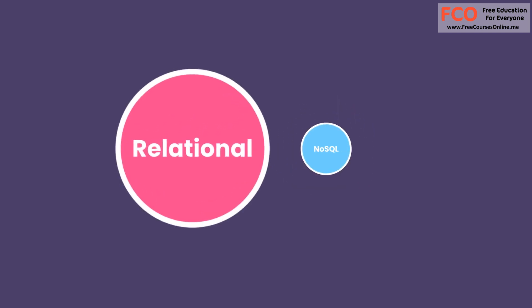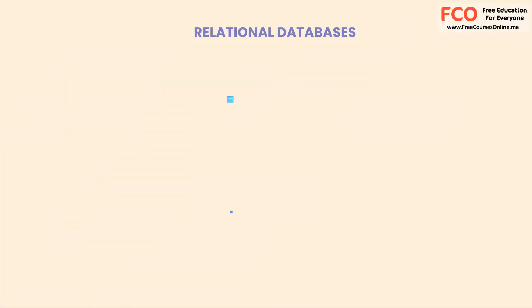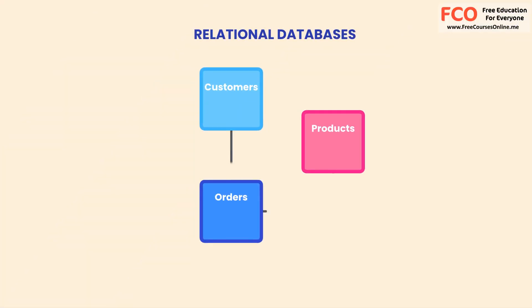In relational databases, we store data in tables that are linked to each other using relationships. That's why we call these databases relational databases.